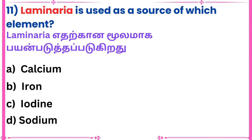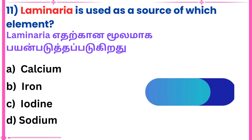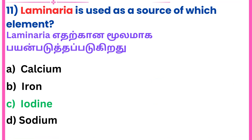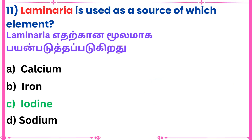11th question: Laminaria is used as a source of which element? Answer: Iodine.